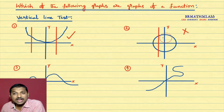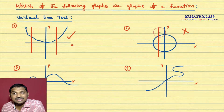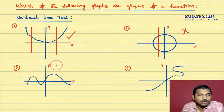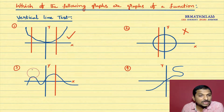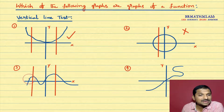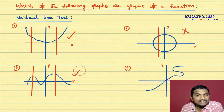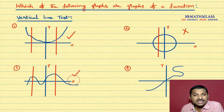Why do we say this is not a graph of a function? Because when we draw a vertical line, it cuts the curve at more than one point. Now observe this graph — draw one vertical line and check whether it cuts the graph at only one point. Yes, you can observe that very easily. When you draw a vertical line to this graph, it cuts the graph at only one point. If it cuts the graph at only one point, then we say that graph is a graph of a function. Yes, this graph is a graph of a function.